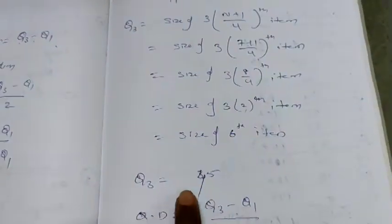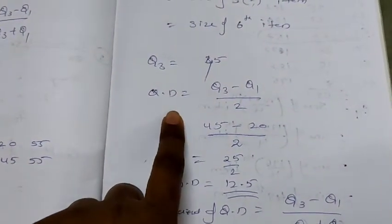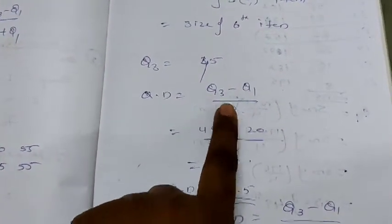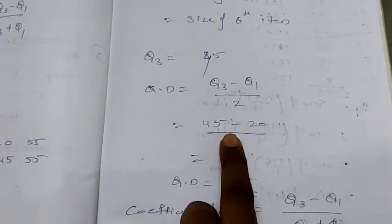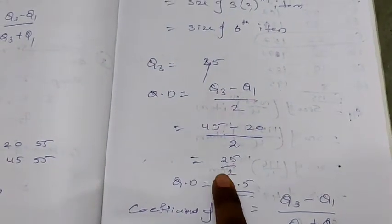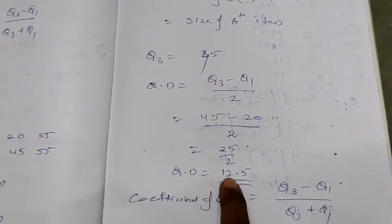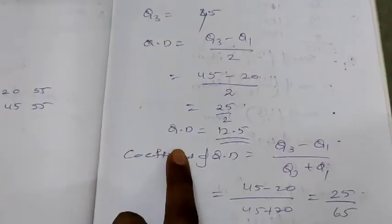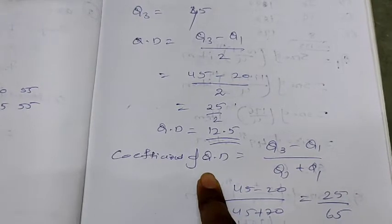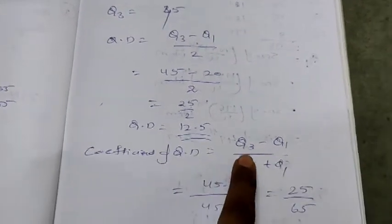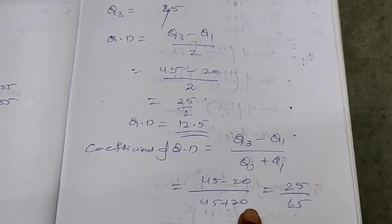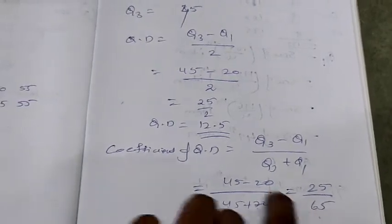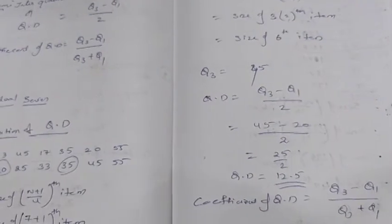So now we got Q1 and Q3. Q1 is 20, Q3 is 45. Now apply quartile deviation formula. Quartile deviation is equal to Q3 minus Q1 by 2. So Q3 is 45, Q1 is 20, so 45 minus 20 divided by 2 is equal to 25 by 2. So quartile deviation is equal to 12.5. Next, coefficient of quartile deviation formula is Q3 minus Q1 by Q3 plus Q1. So 45 minus 20 by 45 plus 20 is equal to 25 by 65.